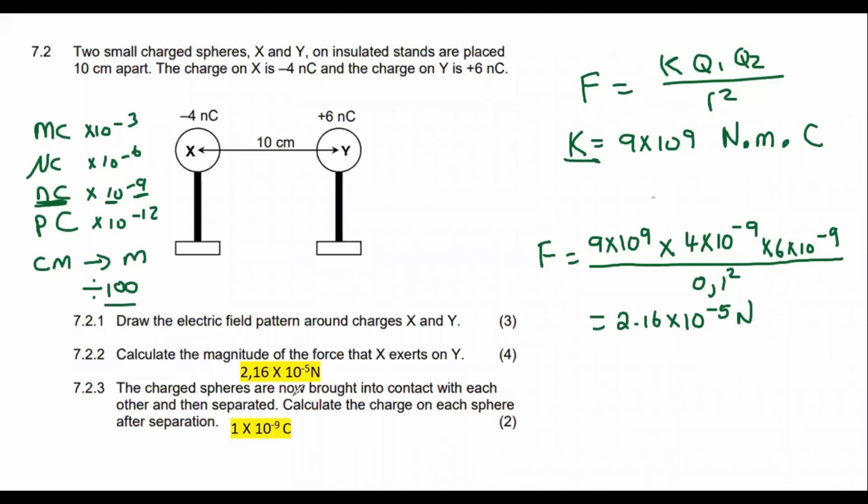Question 7.2.3 is actually a grade 10 formula or grade 10 question. It says that the charged spheres are now brought into contact with each other and then separated. Calculate the charge on each sphere after the separation. So we have this formula. I think they even give it to you on your formula sheet. It's just going to be Q1 plus Q2 over 2. Guys, you're literally finding the average. You know, like when you're finding the midpoint in analytical geometry. You're just saying the first one plus the second one, dividing it by 2 and you're getting the average.